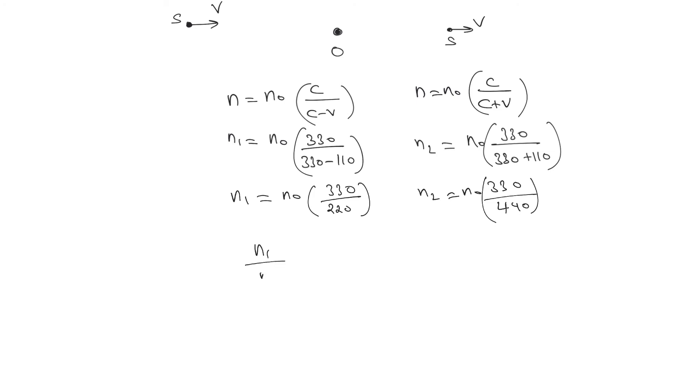If we find the ratio of frequencies n1 by n2, we get 440 divided by 220, which equals 2 is to 1.